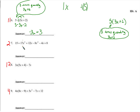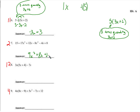Here we're looking for the same kinds of things to collect together. So we have 17x squared minus 8x squared — that's 9x squared. Then 12x minus 4x — that's 8x. And 15 plus 8 is 23.